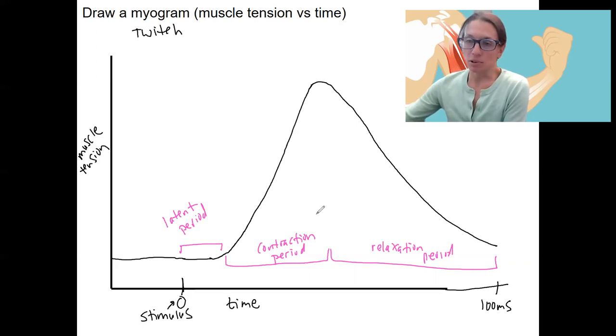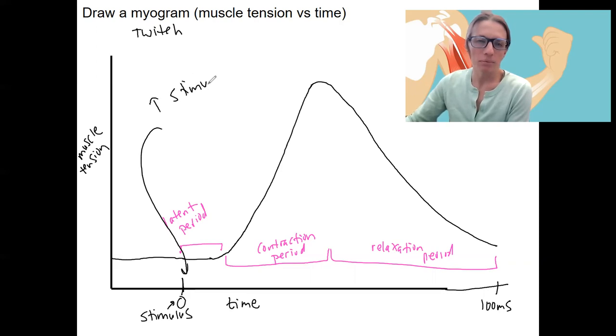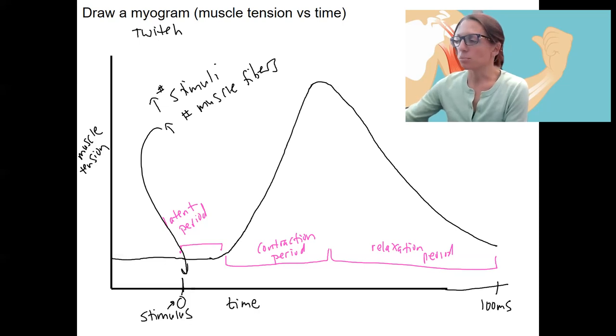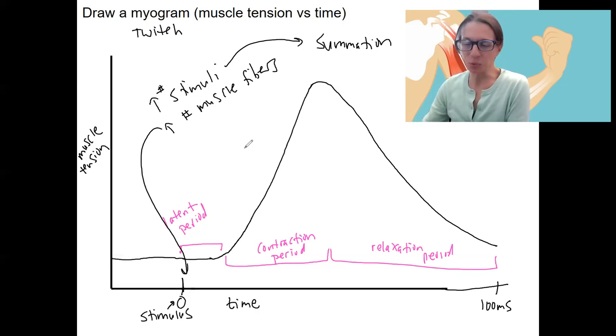So how do we increase the force of muscle contraction? If we want to have more than twitches, we could either increase the frequency of action potentials, so increase the stimuli, the number of stimuli, or we could increase the number of muscle fibers that are responding, that are contracting in the first place. So we're going to talk in this video about summation, which is adding together of twitches due to multiple stimuli. Increased number of muscle fibers we'll talk in the next video, which is about motor units.